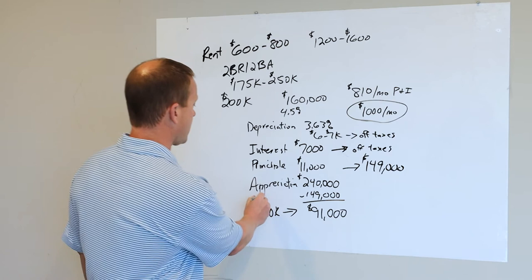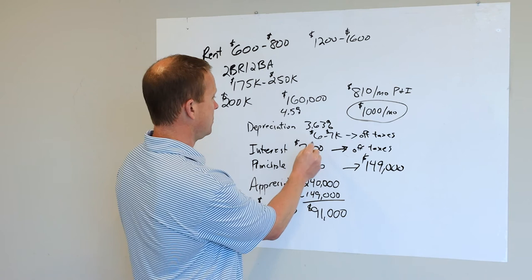And so your student's actually living for less than they would be paying rent. You've turned $40,000 into $91,000 in equity, and you've been able to take about a $14,000 deduction off your taxes each year.